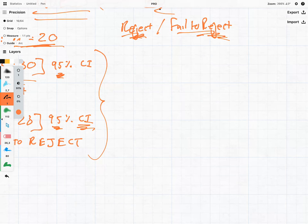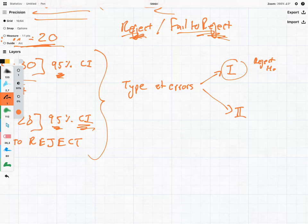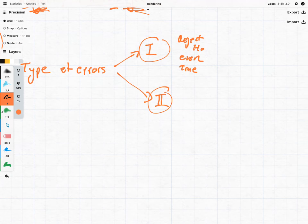And we've got two types of errors. We have type 1 and we have type 2. Now type 1 error is when we reject the null hypothesis but it is actually true. So we reject our null hypothesis even though it is true. Type 2 is when we fail to reject the null hypothesis even when it is false.